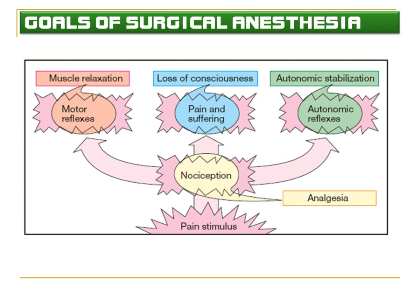Surgical anaesthesia also involves a group of drugs that induce muscle relaxation so that motor reflexes are lost. It also has to stabilize the autonomic reflexes. So these are the different goals of surgical anaesthesia: to remove pain perception, to reduce motor reflexes, and to reduce autonomic reflexes.